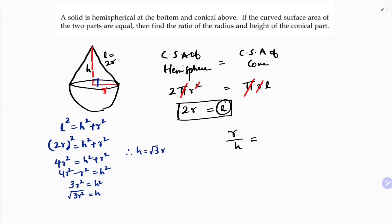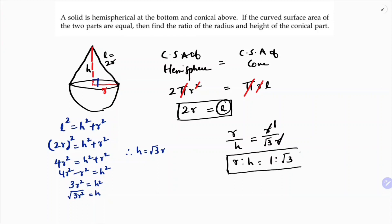Substituting h = √3r, we find the ratio of radius to height. Since height is √3 times r, cancelling r and r gives us: radius to height = 1 : √3. So the ratio of radius and height is 1 : √3.